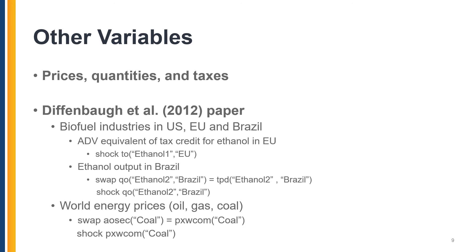Energy prices are an important driver of biofuel demand. World prices of oil, gas, and coal — represented by variable PXWcom, the price index of global merchandise exports by commodity — are endogenous in the standard GTAP closure. To shock PXWcom in the updating simulation, this variable is swapped with technical change applied to global output of the respective commodity, represented by variable AOSEC. For example, AOSEC for coal is swapped with PXWcom for coal. Thus, output technical change in oil, gas, and coal sectors becomes endogenous, while global oil, gas, and coal prices become exogenous and are shocked in the updating simulation.